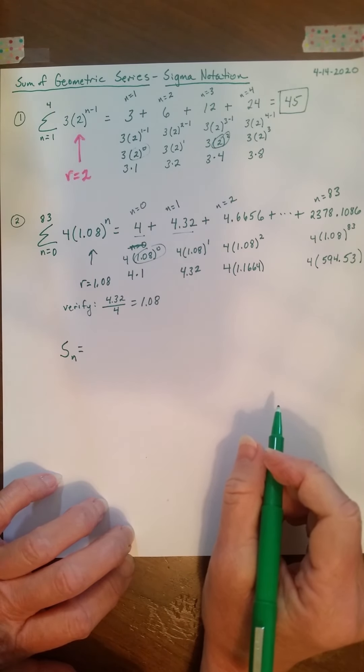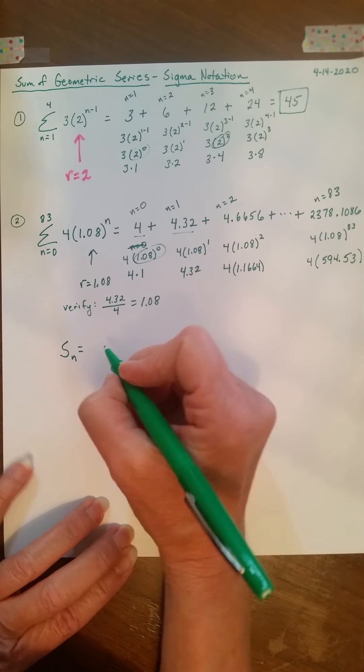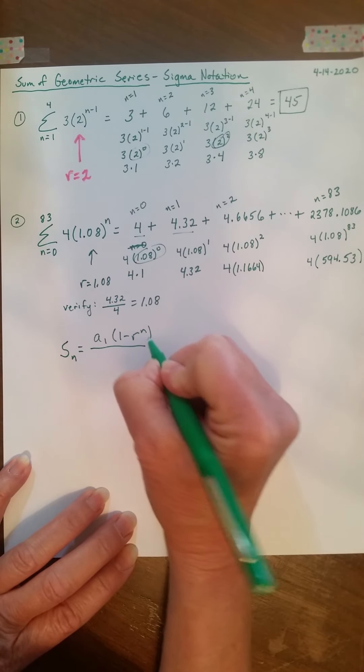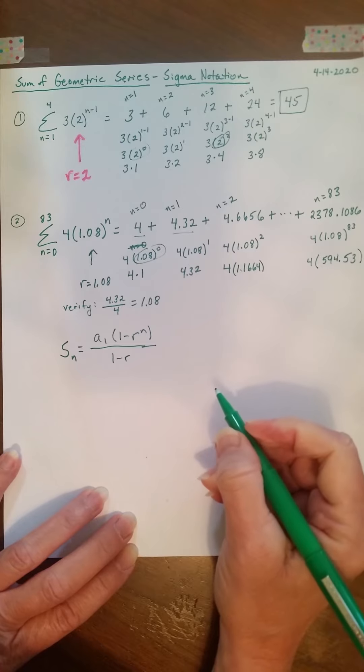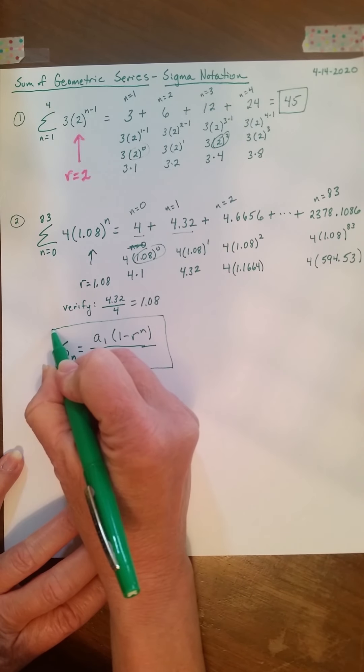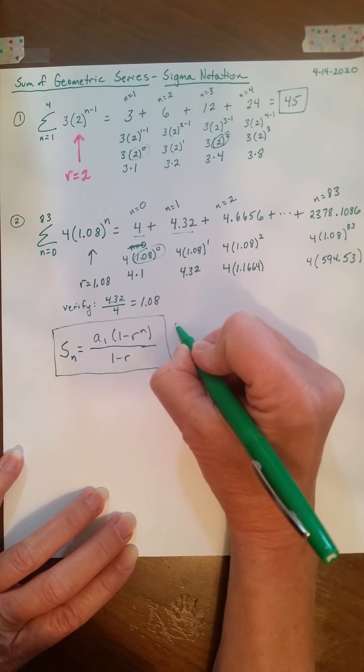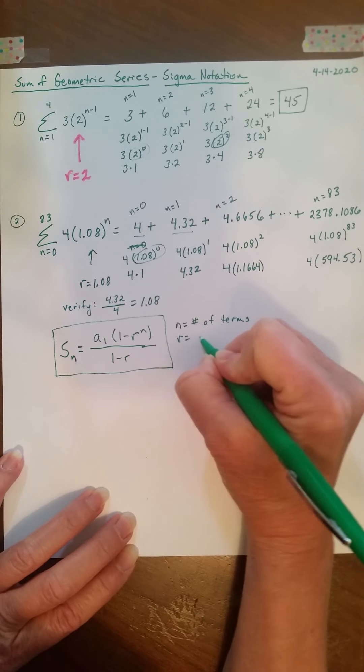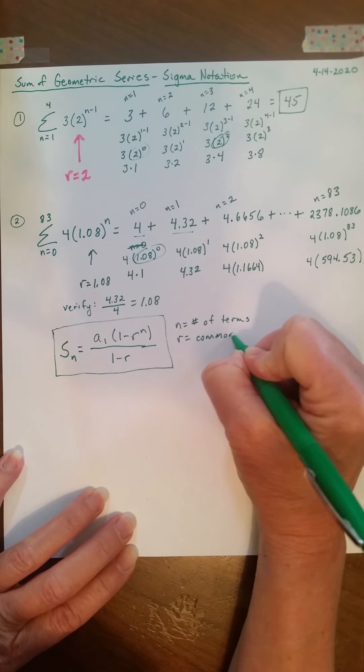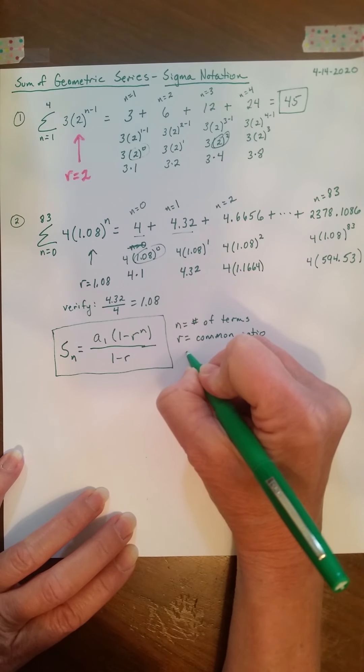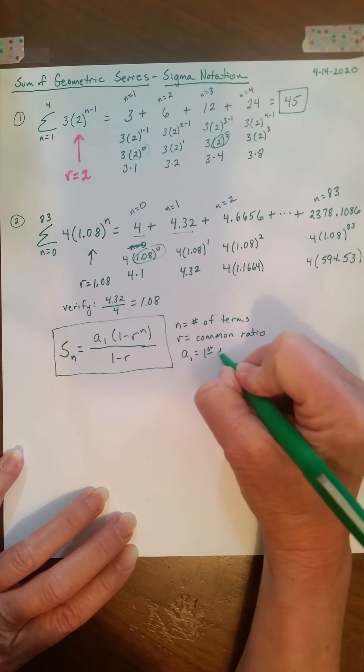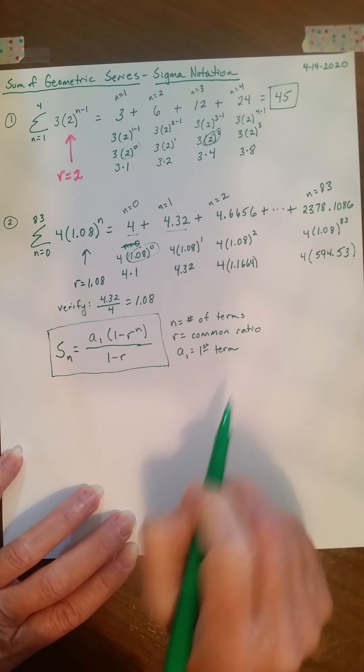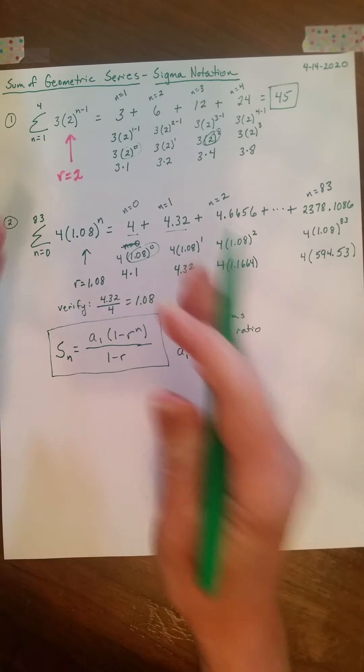Remember, the sum of the first n terms of a geometric series is: The numerator is a sub 1 times 1 minus r to the n all over 1 minus r. So, here, actually, all we need is n is the number of terms. r is the common ratio. And a sub 1 is the first term. Notice, for this formula, we don't even need that last term. But I just went ahead and found it so you could understand that the series does end at that point.